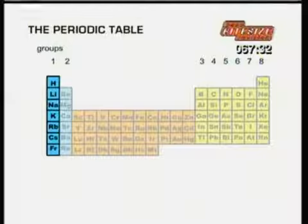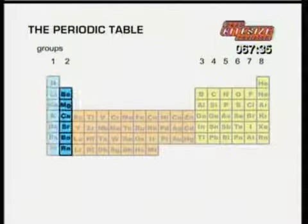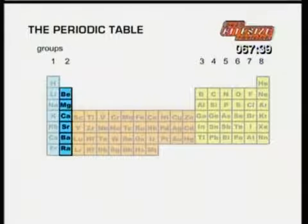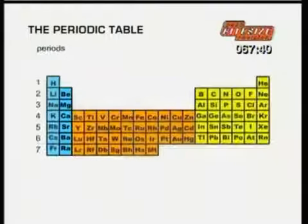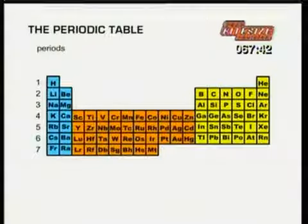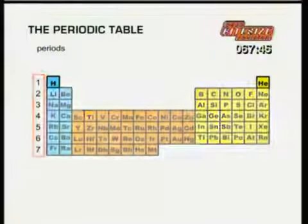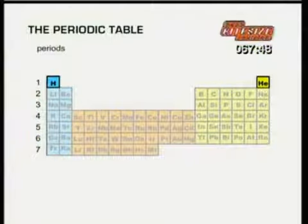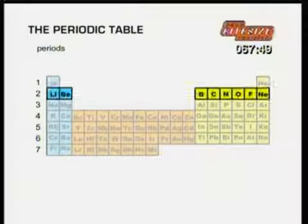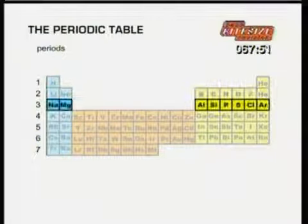The group number usually indicates how many electrons there are in the outer shell of all the elements in that group. Thus, all the elements in group 1 have one electron in their outer shell, and all the elements in group 2 have two electrons in their outer shell, and so on. The periods across the table represent which electron shell is filling up: shell 1, shell 2, shell 3, and so on.